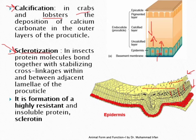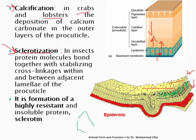Another hardening process is tanning, which involves cross-linkages with pigments such as quinones (oxidized phenols), including melanin, which gives color to the cuticle. Sclerotin is a highly resistant and insoluble protein present in layers in the cuticle, found in hard parts such as the mouth parts of insects that are used for chewing food — in the hard parts of the exoskeleton.